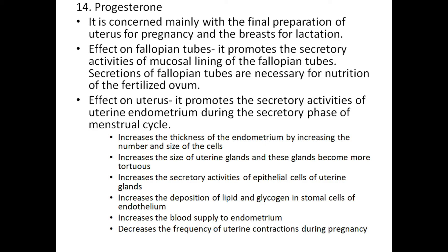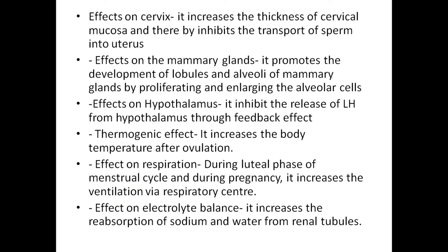Effect of progesterone on fallopian tube: promotes secretory activities of the mucosal lining of the fallopian tube. Its secretion is necessary for nutrition of the fertilized ovum. Effect on uterus: promotes secretory activities of uterine endometrium during the secretory phase of the menstrual cycle. Increases the thickness of endometrium by increasing number and size of cells, increases size of uterine glands, makes glands more tortuous, and increases secretory activities of epithelial cells of uterine glands. Effect on cervix: increases thickness of cervical mucosa, thereby inhibiting transport of sperm into the uterus.